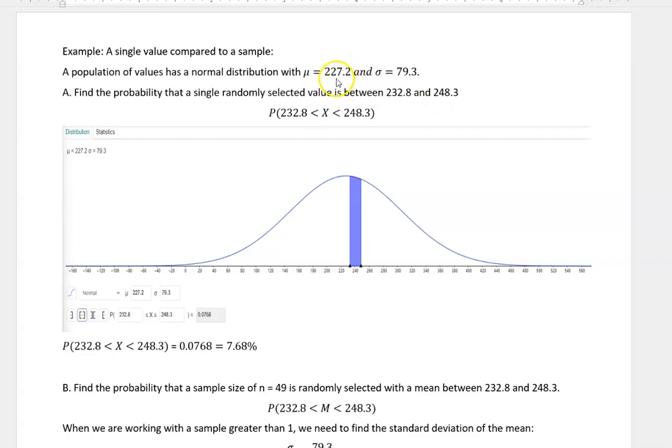You see how the mean is 227. They're saying we're going to select something and it's definitely going to be higher than average.